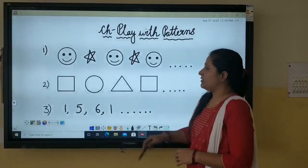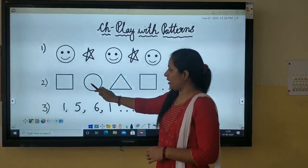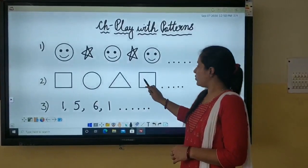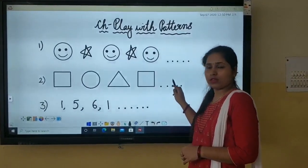Similarly here square, circle, triangle, square. This would be a circle.